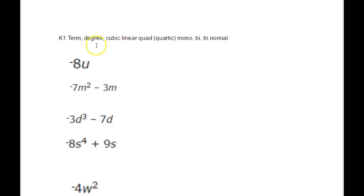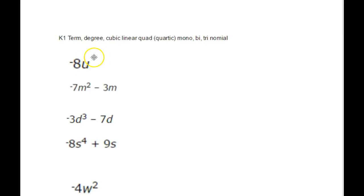So that's our first vocabulary word: 'term.' The next vocabulary word is 'degree.' Degree refers to what's the largest exponent in the polynomial. For example, here we have one term with variable u — u doesn't have a written exponent, which means u is to the exponent of 1. Here the exponent is 2, so the degree is 2. Even though there's another term with degree 1, we always take the highest degree to describe the polynomial.